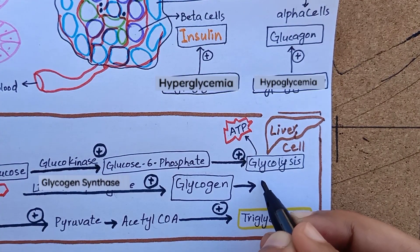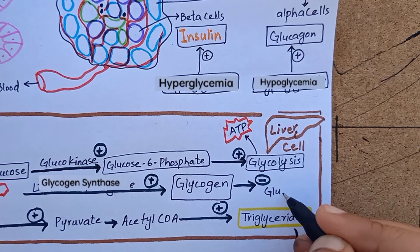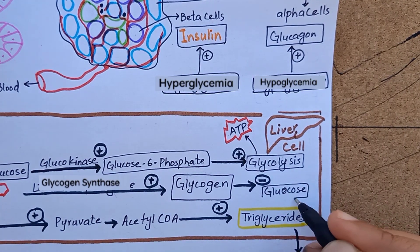Insulin inactivates liver phosphorylase, which is the principal enzyme that causes breakdown of glycogen back into glucose.